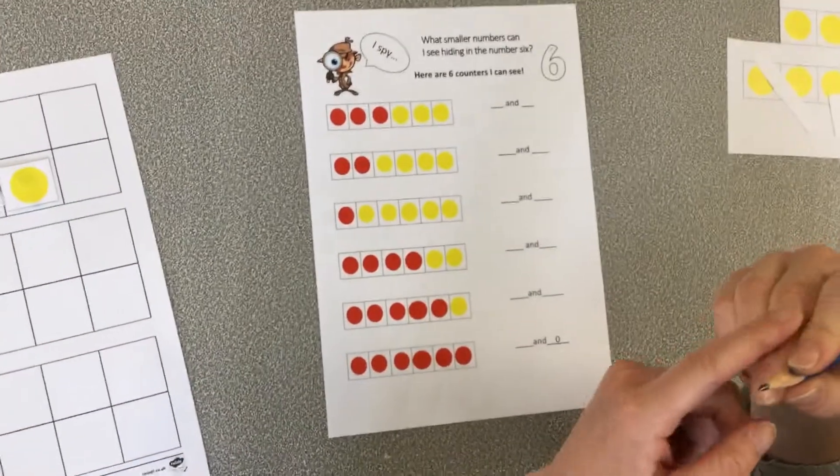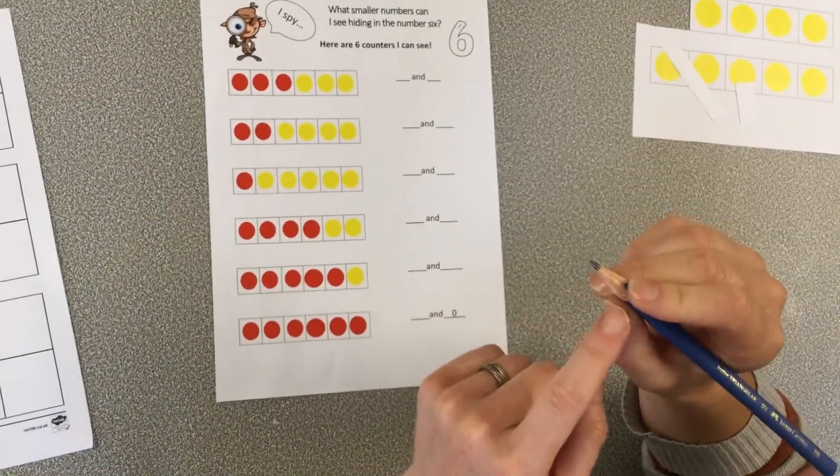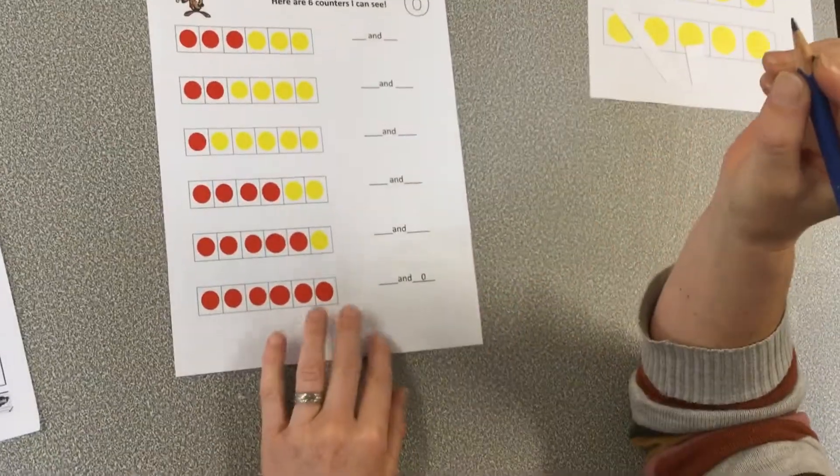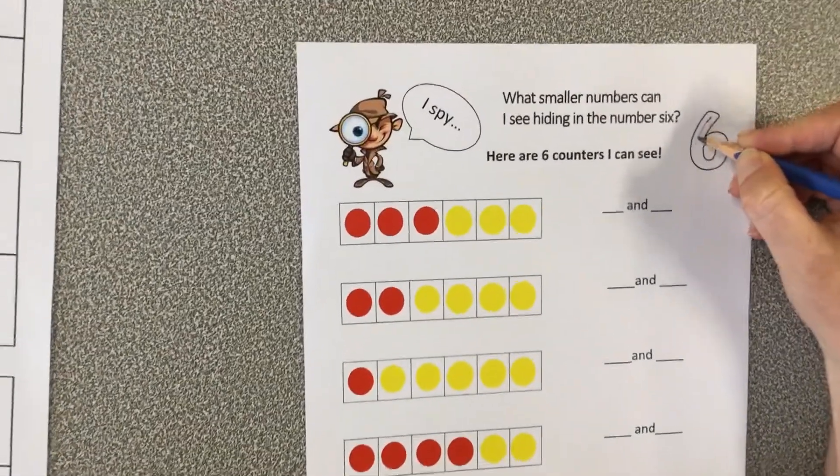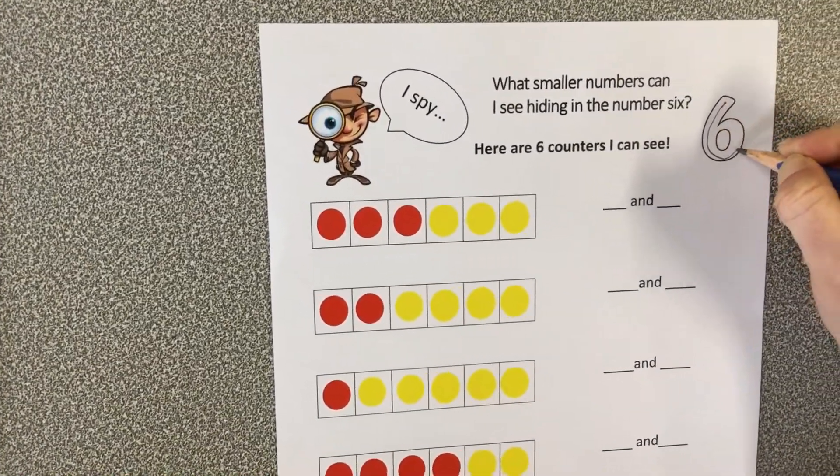The first thing you need to do is practice your pencil grip. Remember your middle finger should be the bed that it rests on, holding it with your thumb and your forefinger. And you're going to start up at the dot and trace around the six nice and carefully.